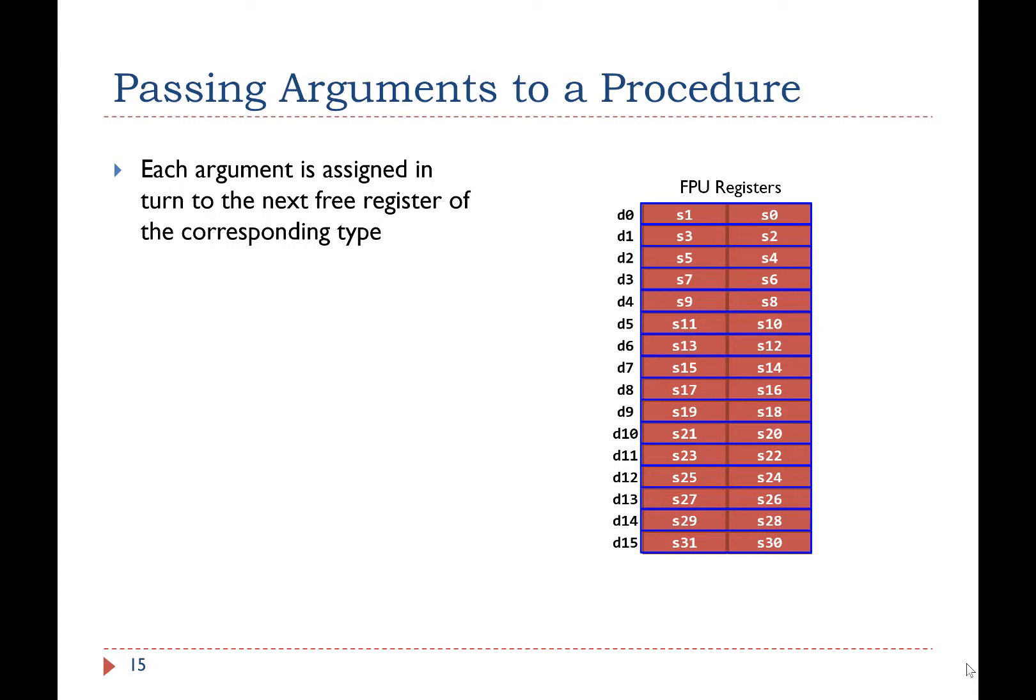How to pass floating-point arguments to a function if FPU is used? When arguments are passed to a function, each argument is assigned in turn to the next free register of the corresponding type. Let's use this example to show how arguments are passed.